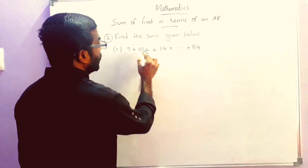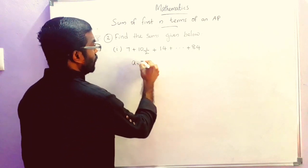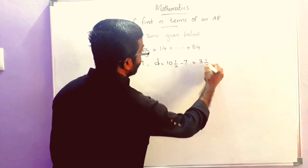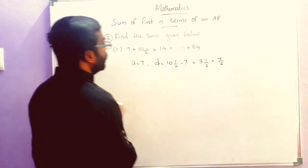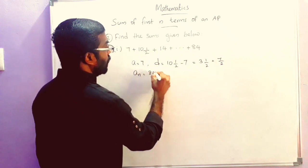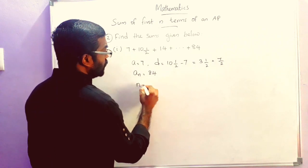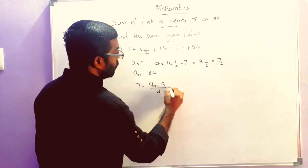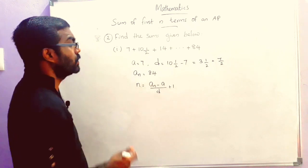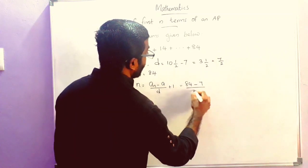First sub-question: 7 plus 10 and a half plus 14 plus etc. plus 84. It is a finite AP. Here A is equal to 7 and D is equal to 10 and a half minus 7, which is 3 and a half, or we can write it as 7 by 2. The last term AN is equal to 84. First we can find N. N is equal to AN minus A by D plus 1, which equals 84 minus 7 divided by 7 by 2, plus 1.